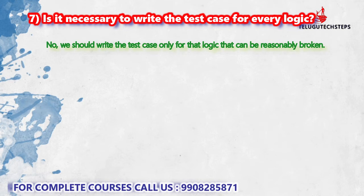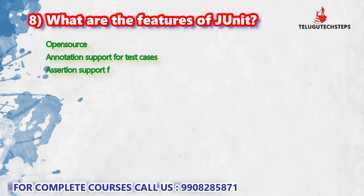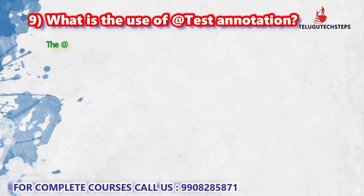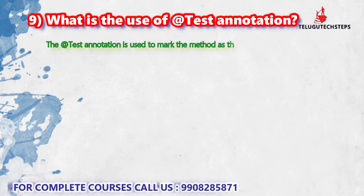What are the features of JUnit? It is open source and has annotation support. Each test case uses annotations. It supports checking expected and actual values, assumption support, and test runner support to execute test cases across different IDEs like Spring Boot. What is the use of the @Test annotation? It is used to mark a method as a test method, telling the JUnit testing engine that this is the method to be tested.